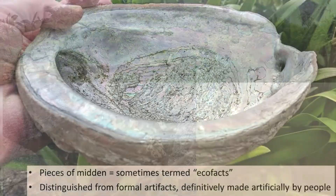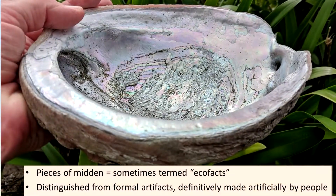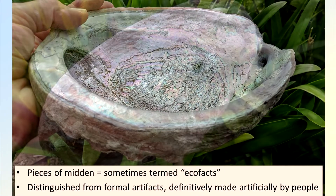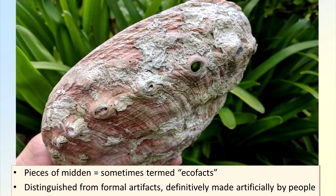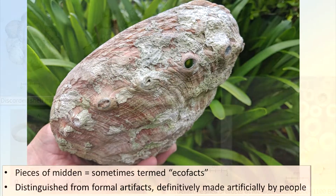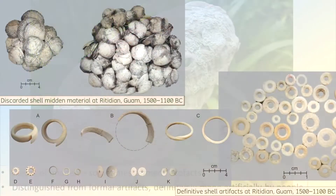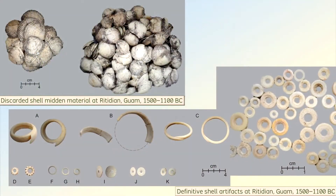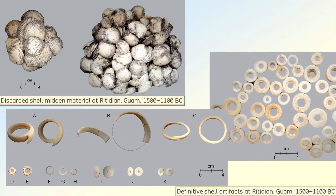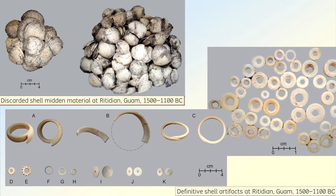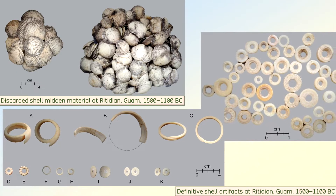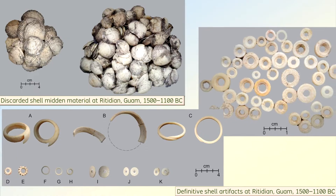When viewed in isolation, each piece of shell, bone, or other midden material looks like it could be a purely natural occurrence. No signs of cutting, slicing, drilling, polishing, or other diagnostic traits would indicate an artificial creation or an alteration of a formal artifact.